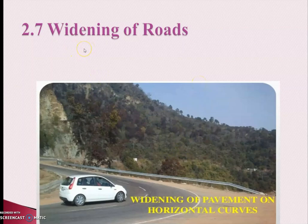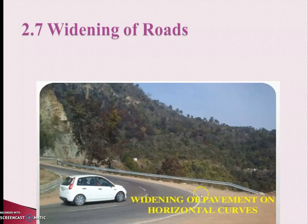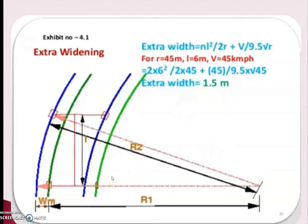Widening means we are going to increase the width of the road pavement at the turning point. This is considered near a horizontal curve — a curve which is only changing the direction of travel. At such locations, as you can see in the image, there is a chance of over-skidding of the vehicle or the vehicle getting out of alignment. For that purpose, we provide extra width for balancing or for stopping the vehicle. So the extra pavement width at a sharp horizontal curve is known as widening of carriageway on curve.